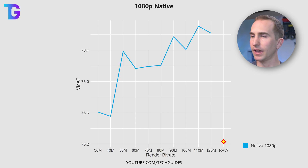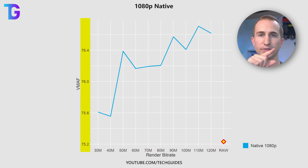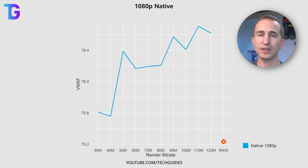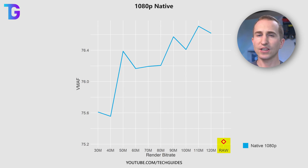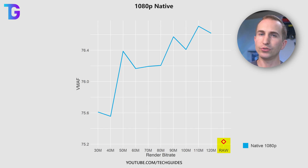And with that, let's jump right into the results. Let's start off with 1080p. On the x-axis you can see the render bitrate, and on the y-axis you can see a quality metric — essentially a measure of how good a distorted video sample from YouTube is when compared to the raw original clip. One additional data point on this graph is the raw data point, which equates to directly uploading the raw recording from OBS onto YouTube.